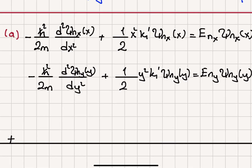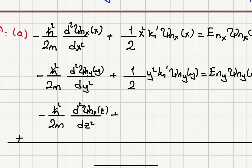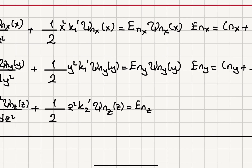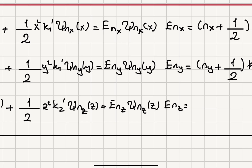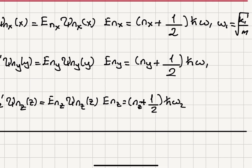Now things change for the z-axis. We have −(ℏ²/2m)(d²ψₙ_z(z)/dz²) + (1/2)k₂'z²ψₙ_z(z) = Eₙ_zψₙ_z(z). The force constant is different here: k₂'. The energy levels are Eₙ_z = (n_z + 1/2)ℏω₂, where ω₂ = √(k₂'/m).